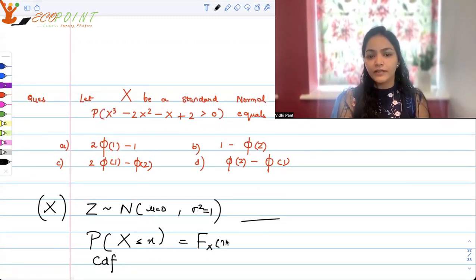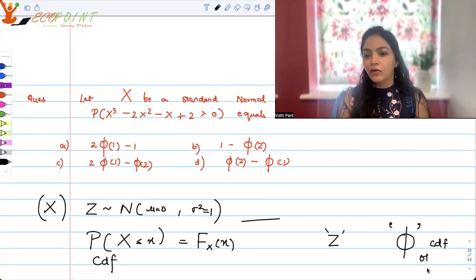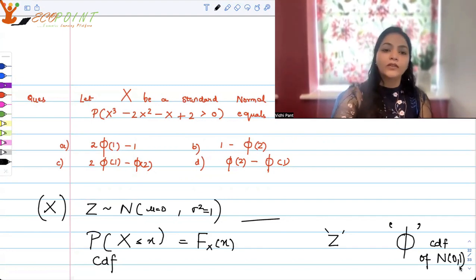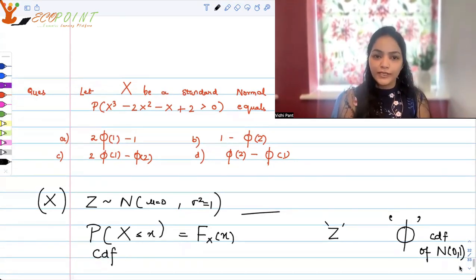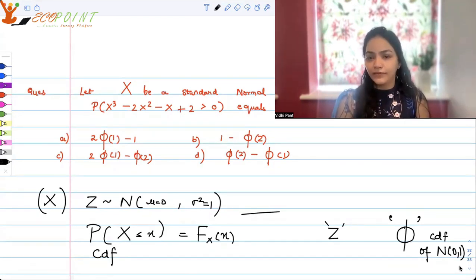Which we call capital F_X(x), and that in case of standard normal random variable is generally called phi. The notation that you can see is basically CDF of standard normal. So in the options wherever you can see phi, that is basically telling you probability X ≤ whatever value is given there.